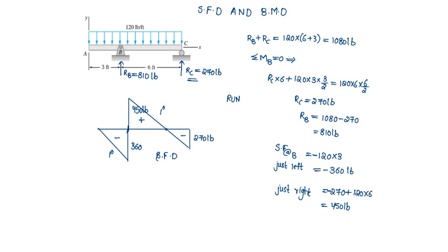Where the shear force changes its sign, the bending moment will be maximum. Let us calculate the maximum bending moment. Let the distance at which shear force changes its sign be X. Then 6 minus X is the remaining distance, and this is 3 feet on the other side. Bending moment will be maximum at these locations. To find X, let us apply similar triangles: 450 by (6 minus X) will be equal to 270 by X. On solving, X will be equal to 2.25 feet. So the remaining 6 minus X will be 3.75 feet.